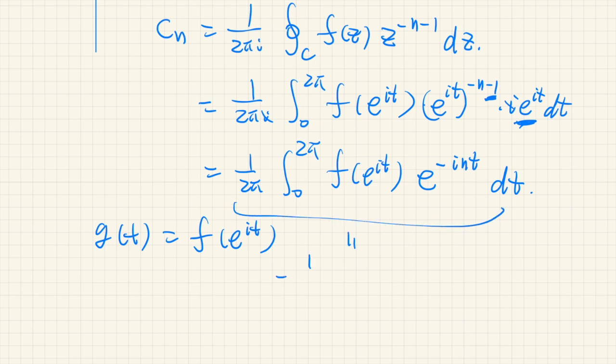Then this integral becomes equals 1 over 2 pi integral from 0 to 2 pi of g of t exponential of negative int dt. So this is exactly the Fourier coefficient of this function.